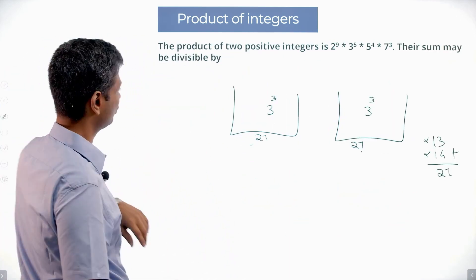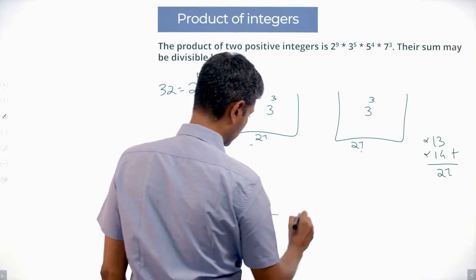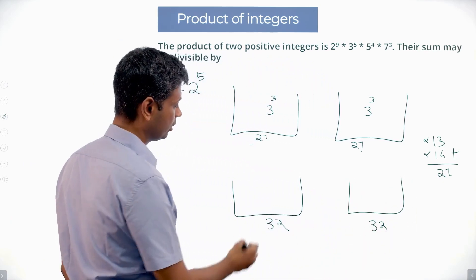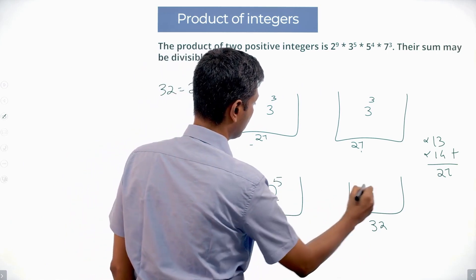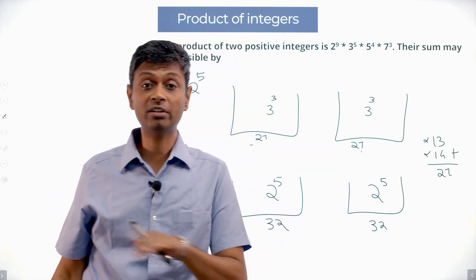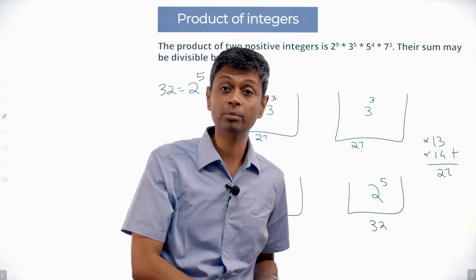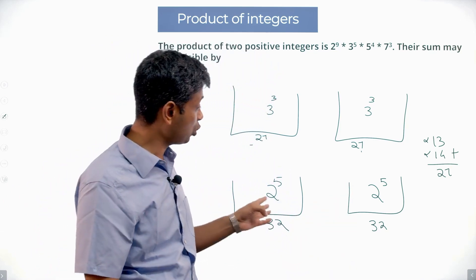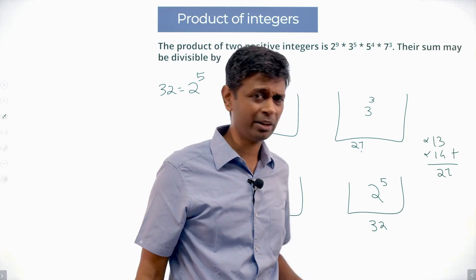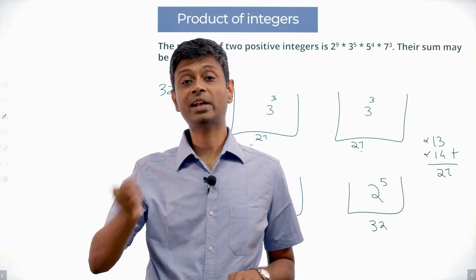Testing 32: 32 = 2⁵. For both numbers to be multiples of 32, I'd need 2⁵ in each — ten 2s total — but I only have nine. So both cannot be multiples of 32. Any split forces one number to carry at least five 2s (a multiple of 32) and the other fewer than five (not a multiple of 32). Adding a multiple of 32 and a non-multiple of 32 never gives a multiple of 32. So 32 is also ruled out.